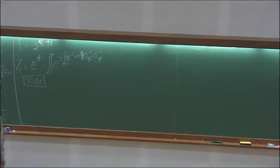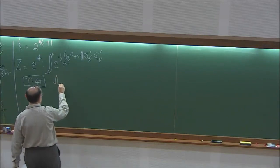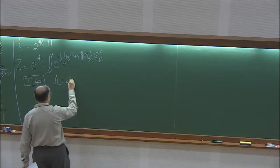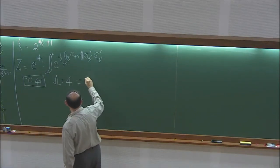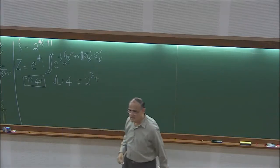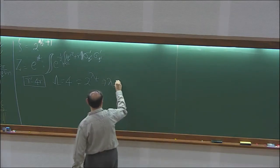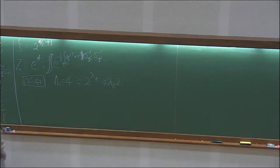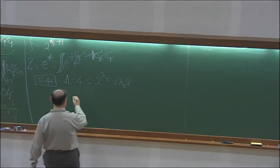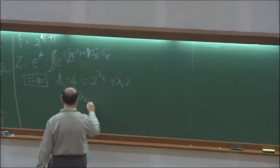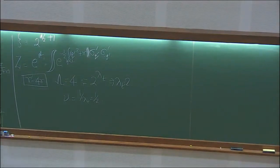Is R relevant or irrelevant? It is relevant. Lambda is 4, so nu is 1 over lambda_t, which is one-half. We have recovered the mean field value of nu, namely one-half. The Gaussian model is basically another way of doing mean field theory.